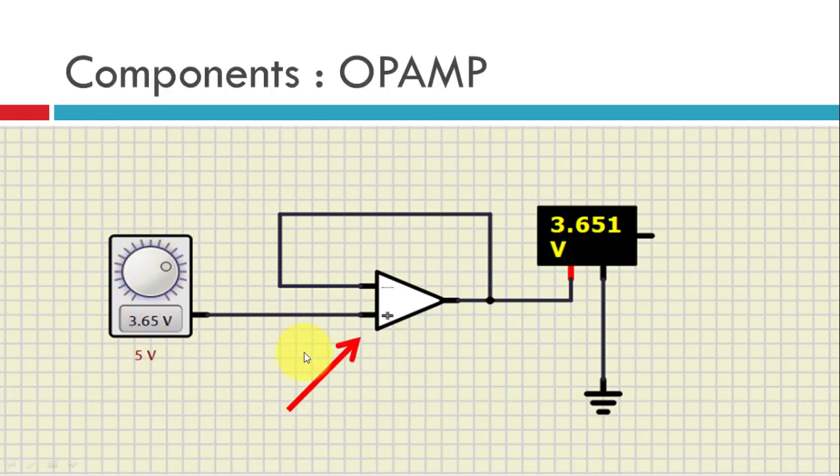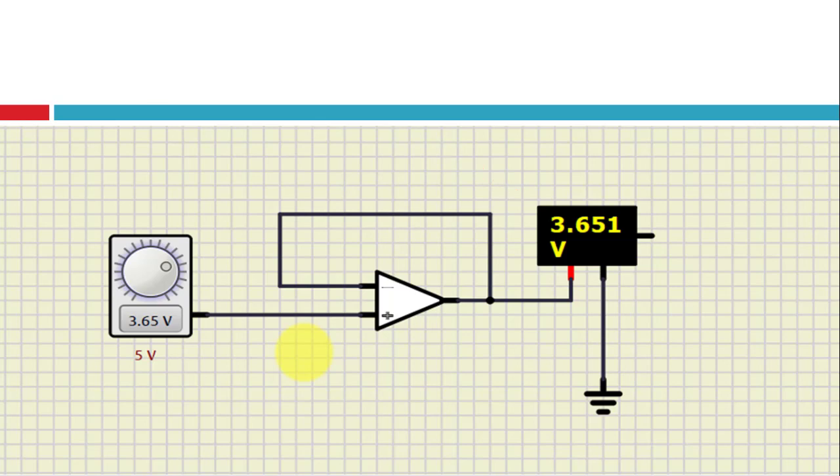Then the second component is the op-amp, the operational amplifier. Then we have the voltmeter to measure the output voltage and then the ground to complete the circuit.